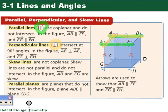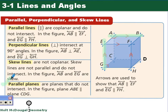In our figure, starting with line AB, a line that's skew to AB is line EG. Our last type is parallel planes — planes that don't intersect. We name planes using three letters. So plane ABE is parallel to plane CDG.